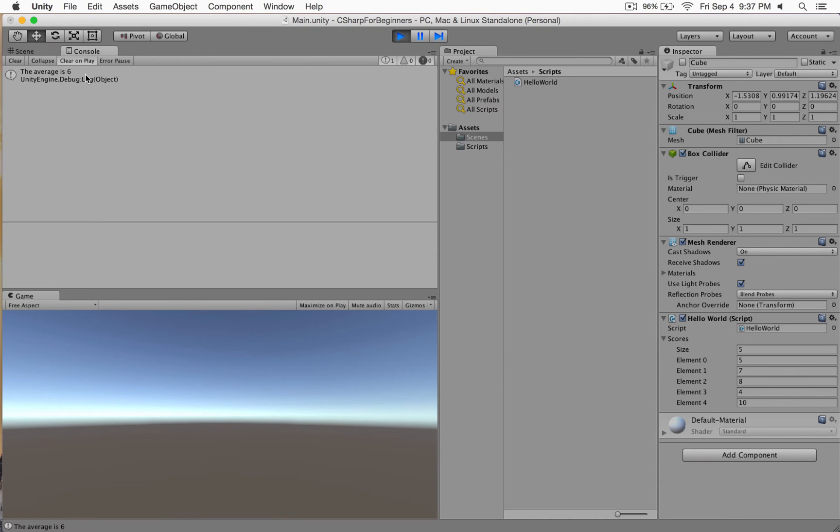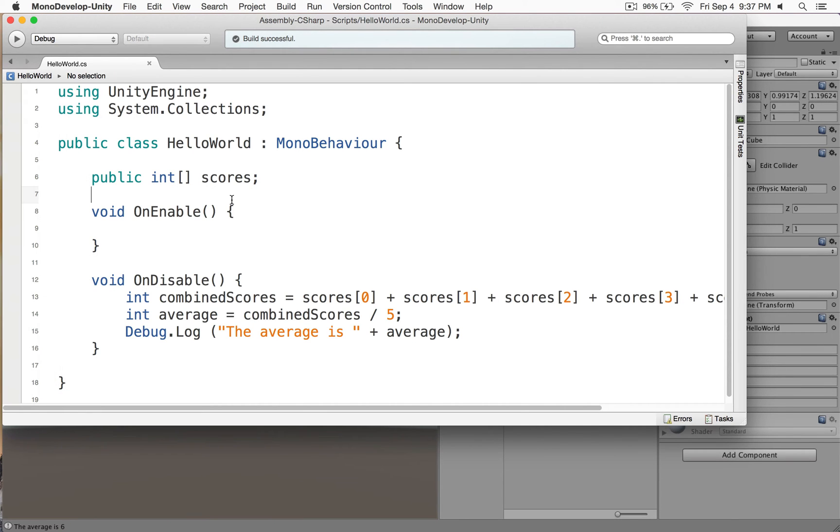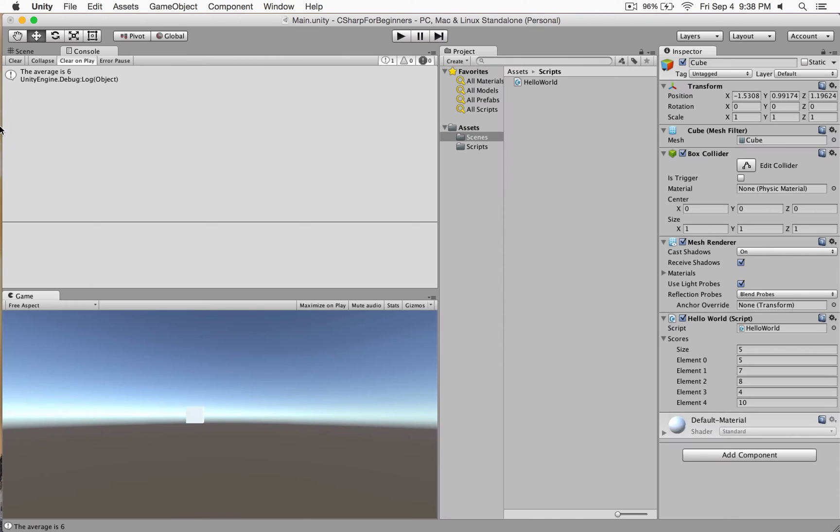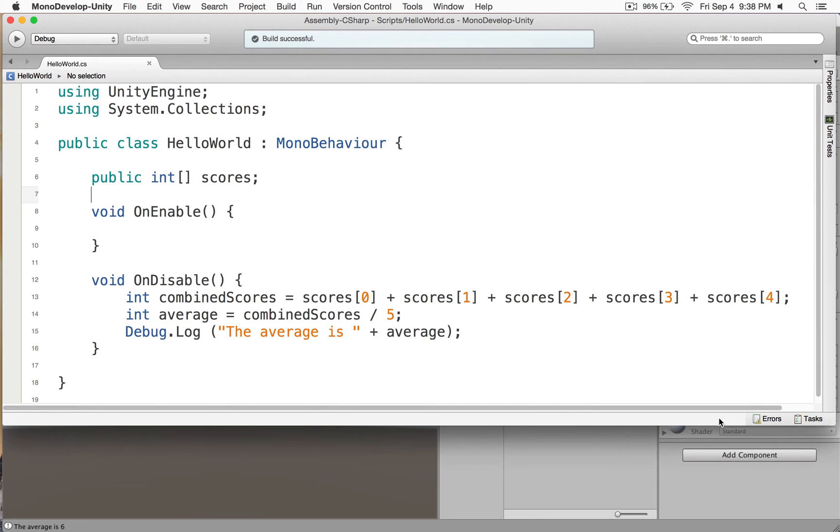I'm going to switch back to MonoDevelop. I'm going to save it and then build it. Now we'll run again. We'll select our cube and disable it. The reason why it didn't run before was because I simply forgot to save it. If you don't save it, Unity won't know about the changes, and thus your changes won't be picked up.